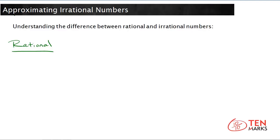A rational number is one that can be written in the form of a fraction p over q, where p and q are both integers and q is not zero. If you divide p by q, there are two different types of decimals that you can get for rational numbers. Let me show you examples of each.